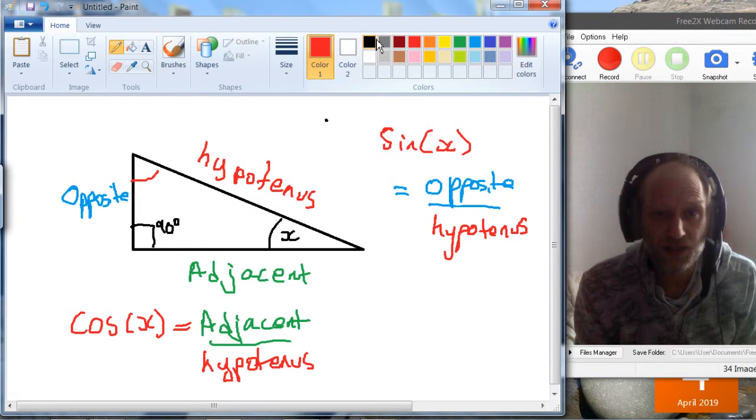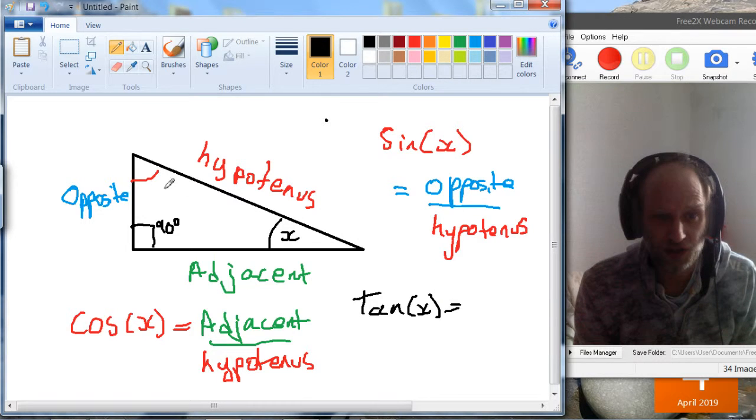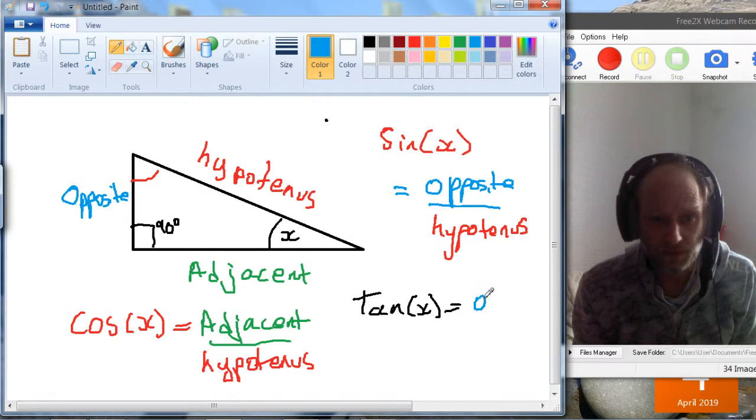And the last one is tan. Tan of x gives you, as these two, it's the opposite over the adjacent.